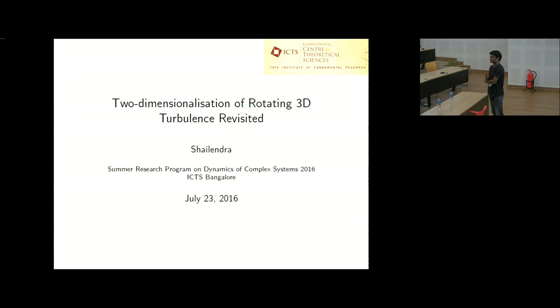I will be talking about the work which I have done here during my stay at ICTS. The title is Two-Dimensionalization of Rotating 3D Turbulence Revisited, revisited in the sense that we started with the problem of intermittency in 2D turbulence. Rather than talking about intermittency in 2D turbulence, let's go from 3D turbulence to 2D turbulence and see how intermittency behaves as we go from 3D turbulence to 2D turbulence.